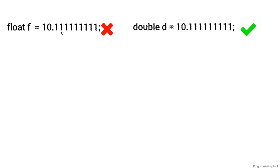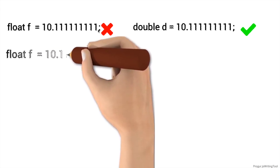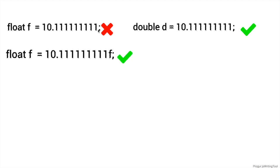To store a decimal number in a float, you need to tell the JVM explicitly. You need to say: 'JVM, I want to store a decimal value in a float.' To do that, you put an 'f' at the end of the value. So the code becomes: float f = 10.1111111111f — this is absolutely valid because you're specifying to JVM that it's a float value.